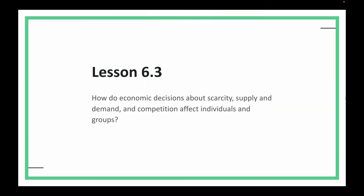We are well on our way into Chapter 6. Welcome to Lesson 6.3: How do economic decisions about scarcity, supply and demand, and competition affect individuals and groups?